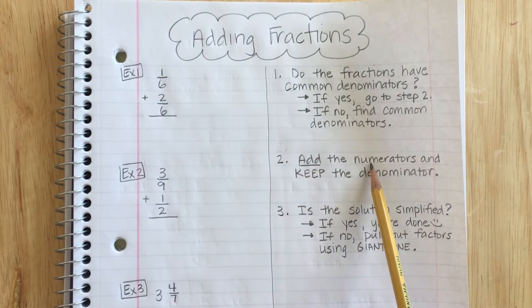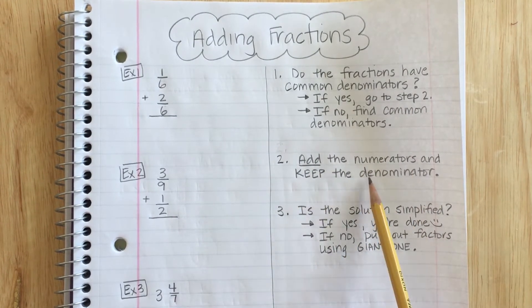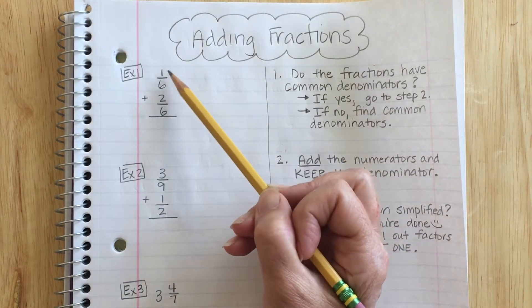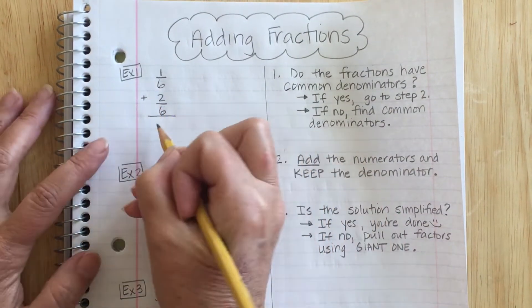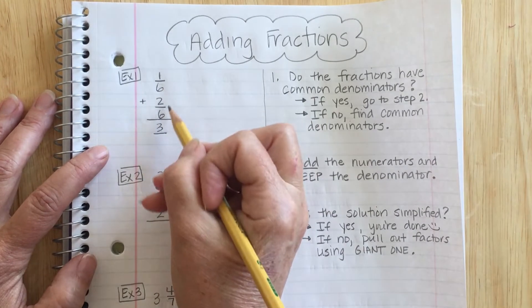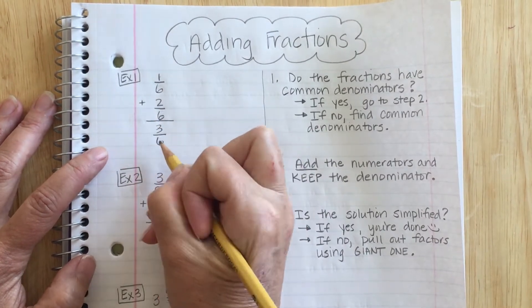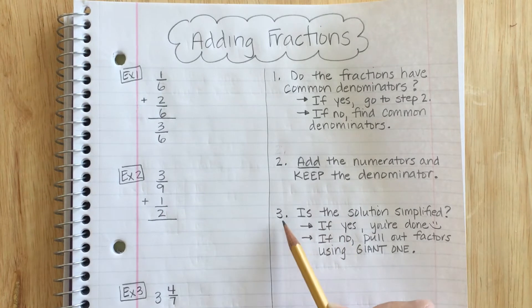Step two tells me to add the numerators and keep the denominator. So I'm going to add 1 plus 2 is 3. And I'm going to keep my denominator of 6. Now I'm going to go to step three.